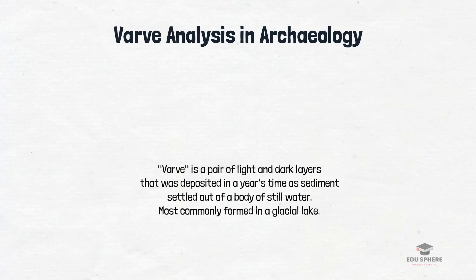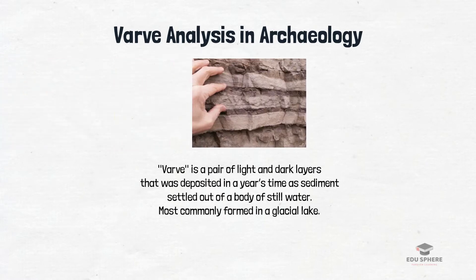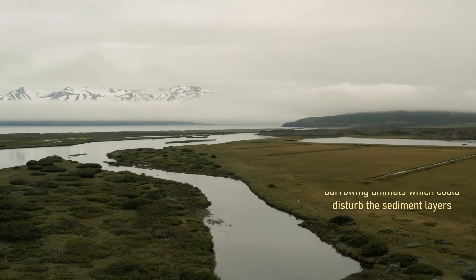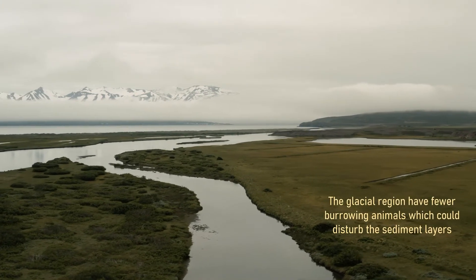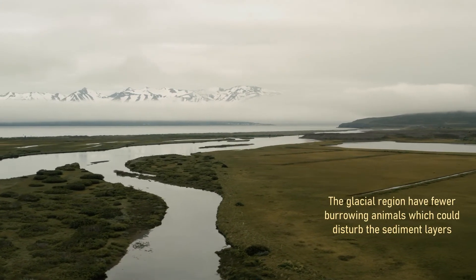Varves are annual sediment layers usually found in lakes and result from the transport of sediments due to the seasonal changes in the weather and climate. Glacial lakes usually have unspoiled varve records since there are fewer animals found in the glacial environments that could displace the sediments.